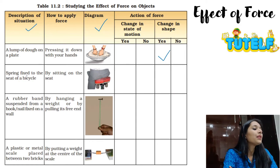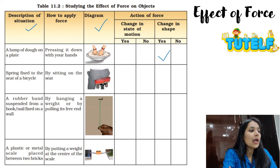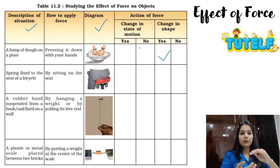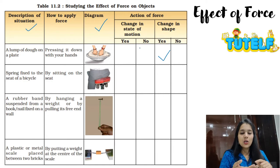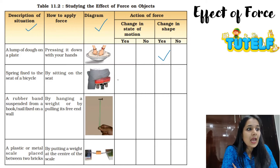Next case: a spring fixed to the seat of a bicycle. There is a bicycle with a spring attached, and a person is sitting on the seat. When the person sits, the spring gets compressed. So there will be a change in state of motion — yes — and there will also be a change in shape.